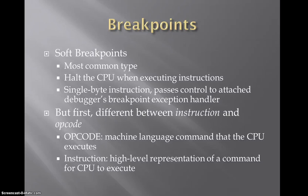With that, we've got the idea of breakpoints. There are two main types: soft breakpoints and hard breakpoints. Soft breakpoints are the most common type — they simply tell the CPU to halt when executing a given instruction. It's a single-byte instruction that passes control from the process the debugger is attached to back to the debugger itself, where an exception handler picks up and processes it. It's important to note the difference between an instruction and an opcode. An opcode is the actual machine language command the CPU executes, while the instruction is the higher-level representation. The author makes the analogy that the opcode is like an IP address and the instruction is more like DNS — more human-readable.